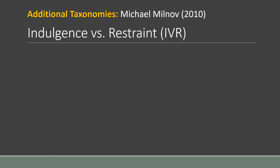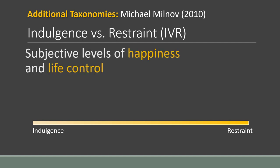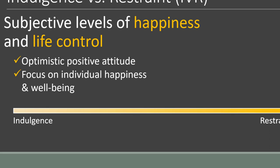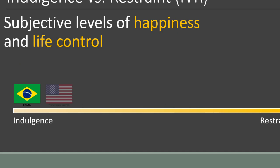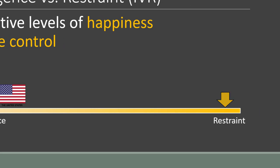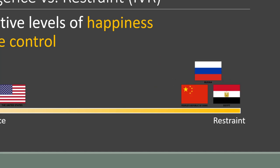Kind of related is the Indulgence versus Restraint dimension, or IVR, proposed by Michael Minkov, a Bulgarian sociologist. Hofstede added this sixth dimension in 2010, which has to do with the subjective levels people feel in terms of happiness and life control. A high rating on this scale is Indulgence, where people enjoy life—they have an optimistic, positive attitude, focusing on individual happiness and well-being. Having fun and fulfilling your desires is natural. Smiling is normal, and freedom of speech is important. Brazil and the U.S. are examples of indulgent societies. On the other side is restraint, where people feel less happy and less in control of their lives. Smiling is viewed with suspicion. Friends and leisure aren't as important. Egypt, Russia, and China fall on the restraint side of the scale.